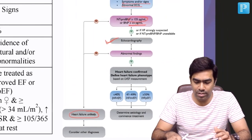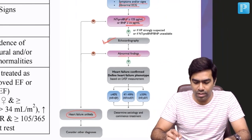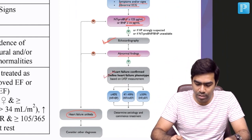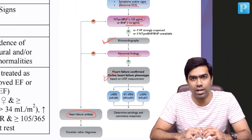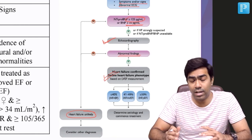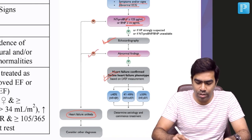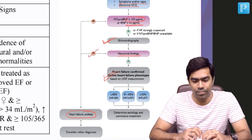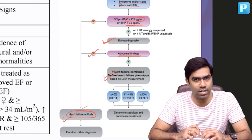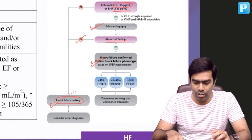If the echocardiography is also abnormal and the NT-proBNP is high, then in that situation you can definitely diagnose heart failure — whether it is reduced ejection fraction, mildly reduced ejection fraction, or even preserved ejection fraction. If the echo is normal and there is no abnormal finding, then once again heart failure becomes extremely unlikely and you have to consider alternative possibilities.